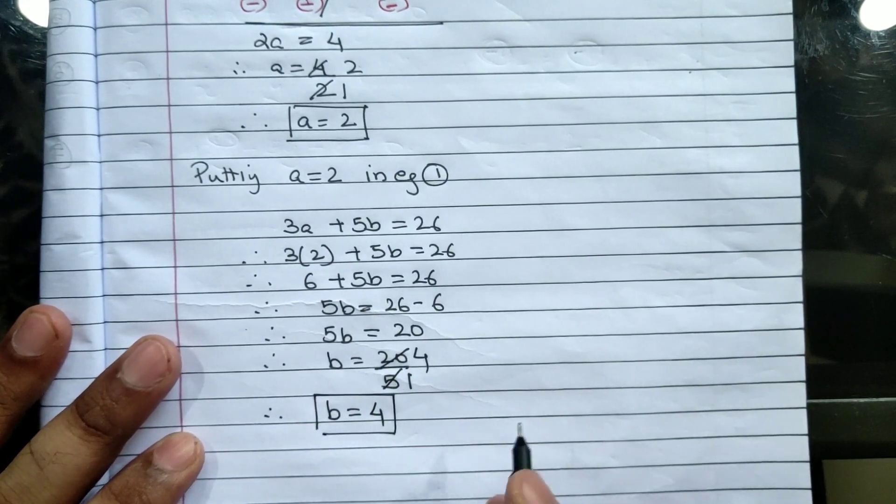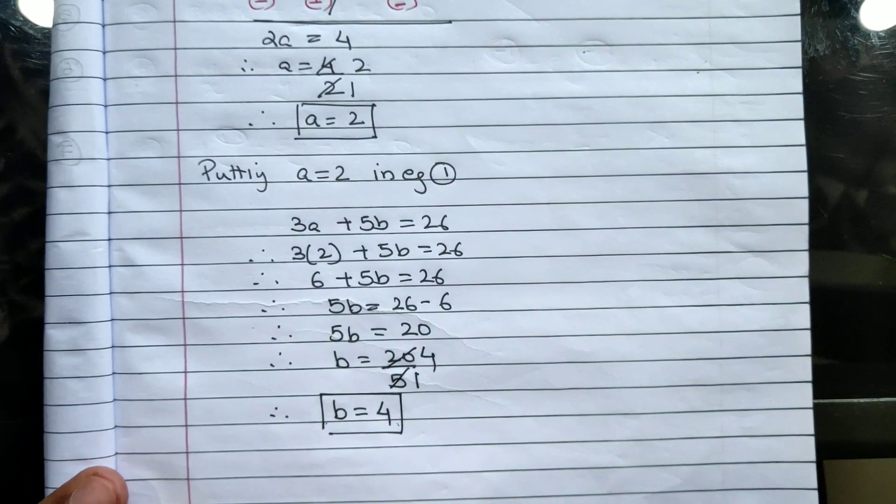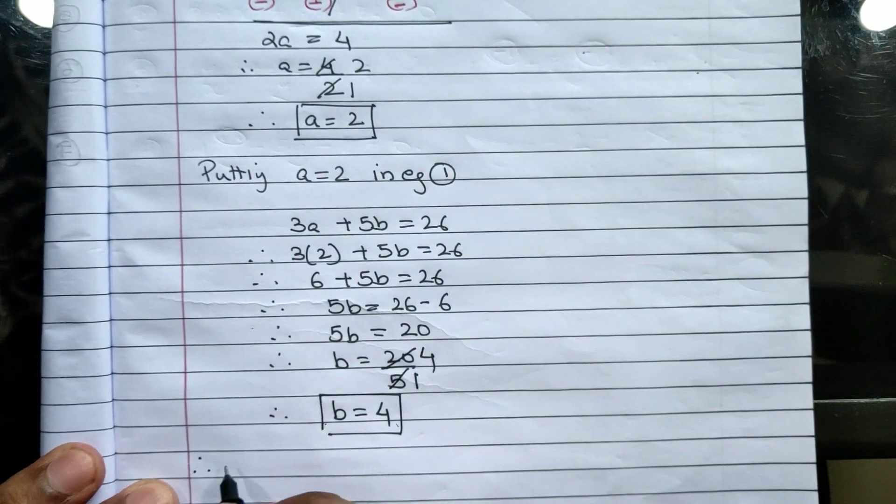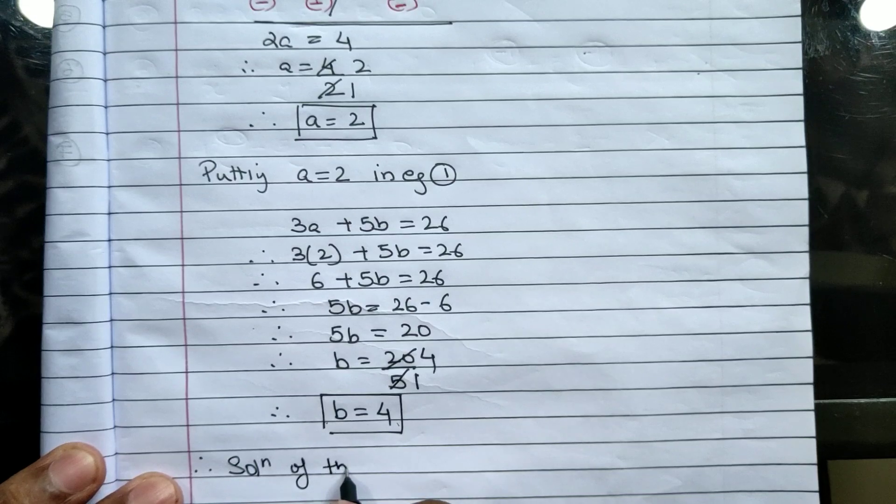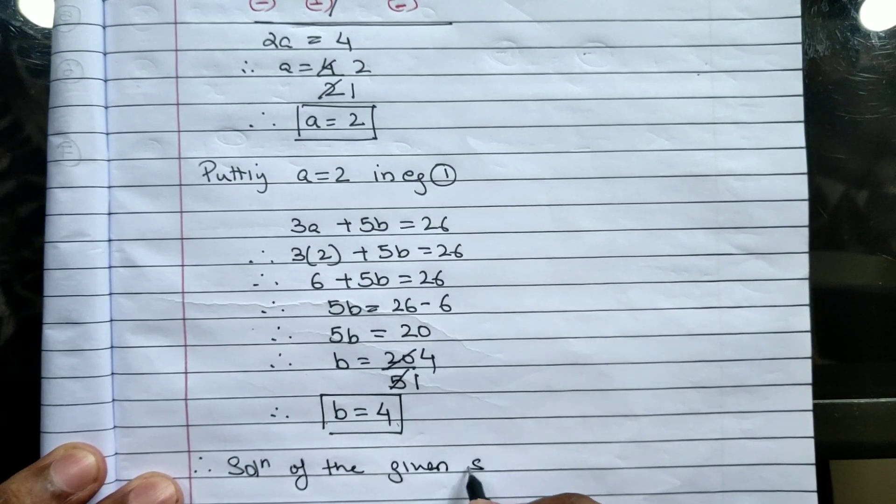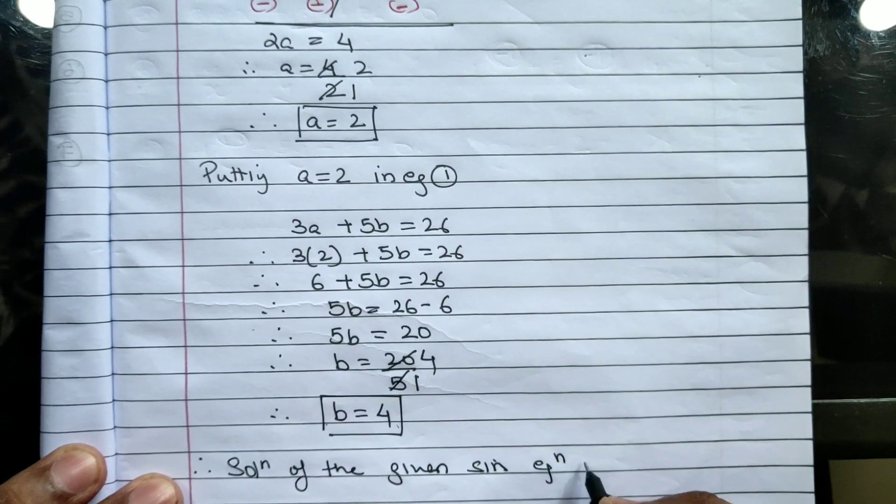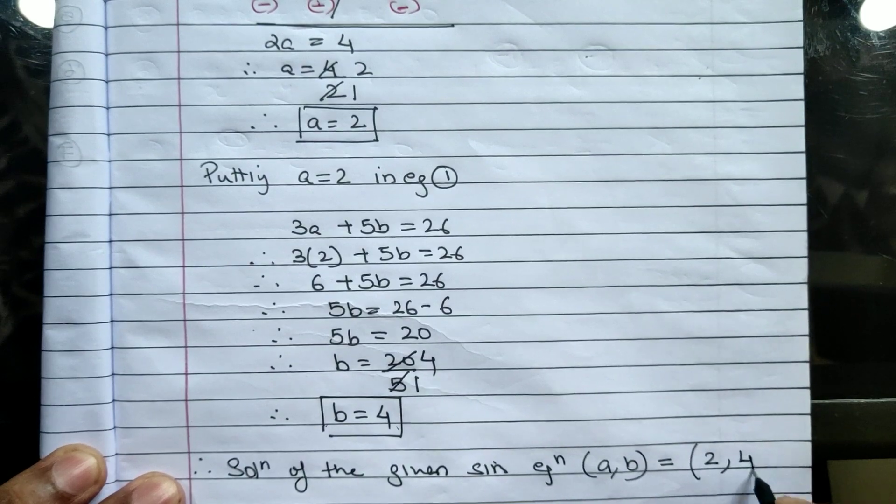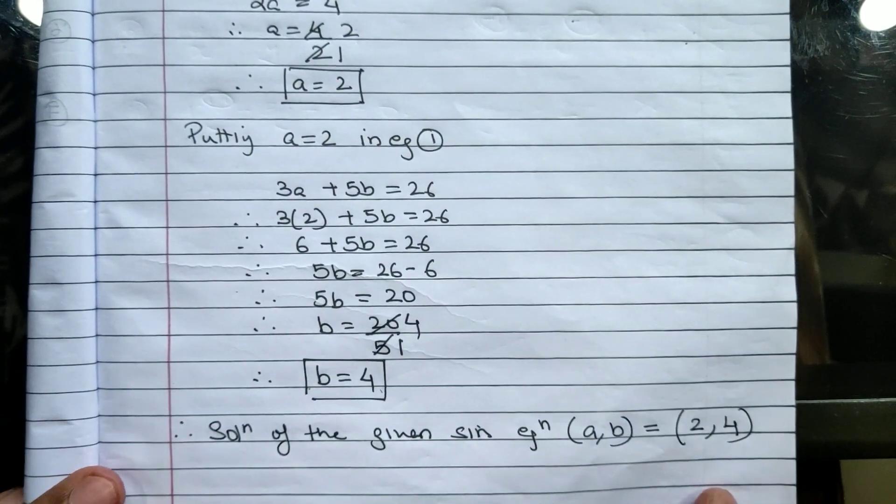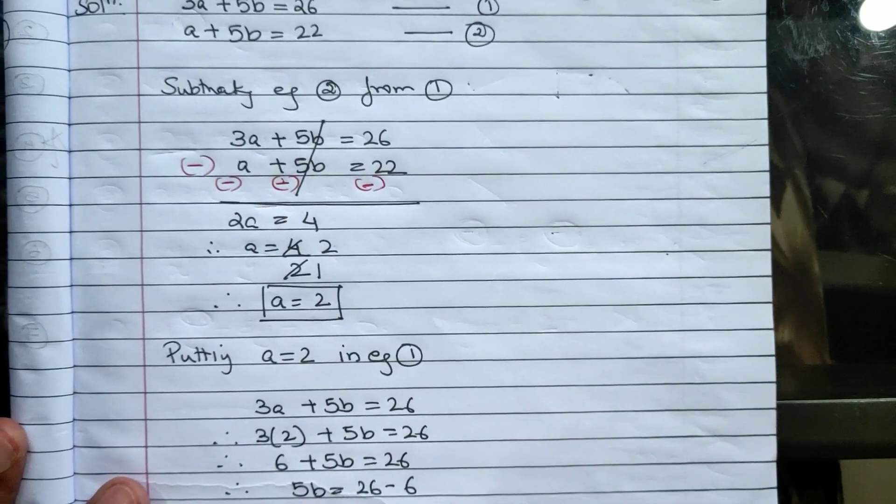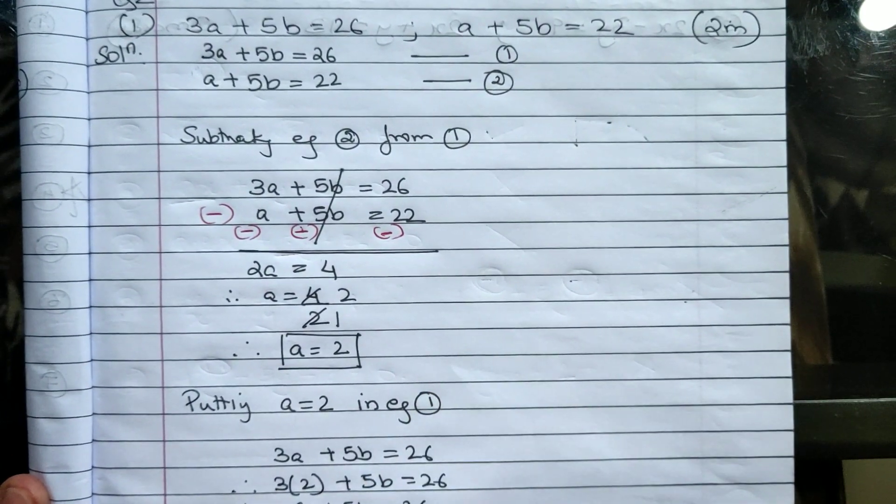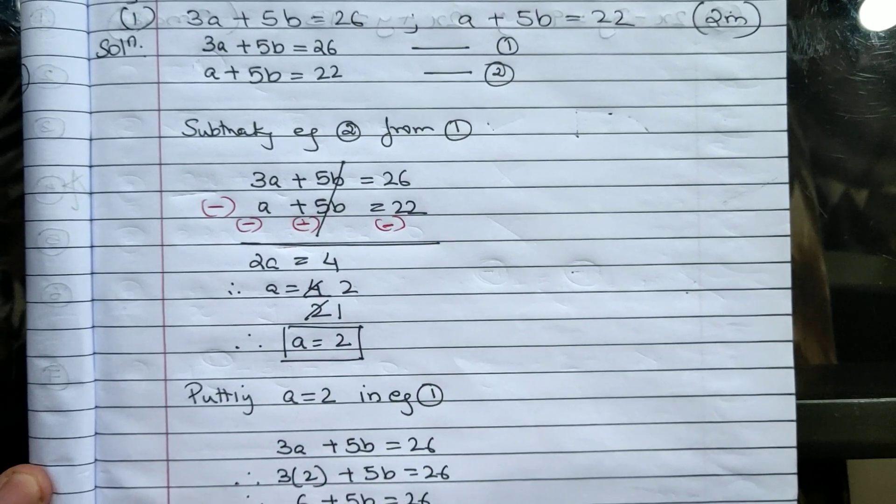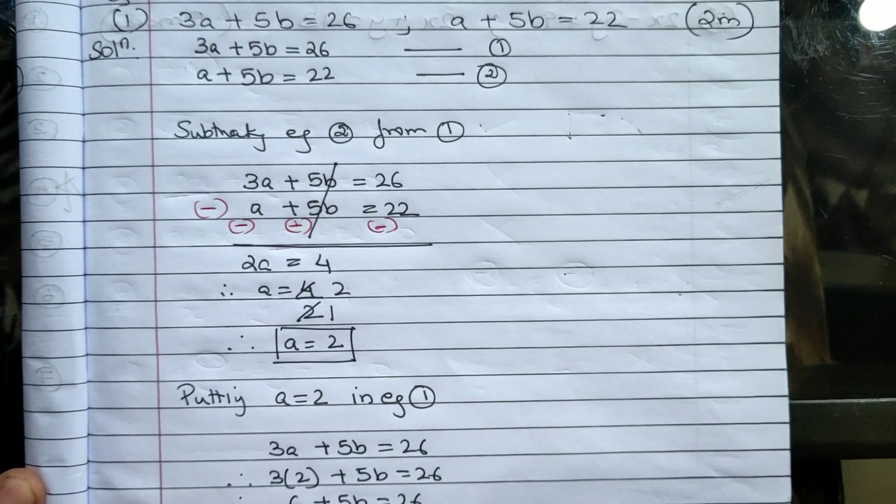Therefore 5b will be equal to 26 minus 6. Therefore 5b equals 20. Therefore b equals 20 upon 5. Therefore b equals 4. So my final answer is a equals 2 and b equals 4. Therefore the solution of the given simultaneous equation is a comma b equals 2 comma 4. Simple, very simple sum. I hope you understand this sum. If you understood, pause this video and try to solve it again.